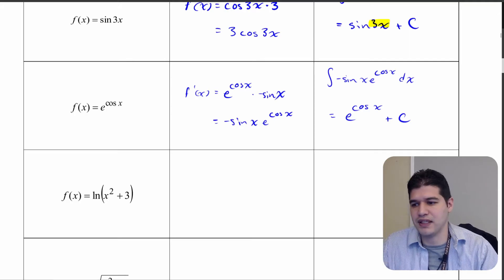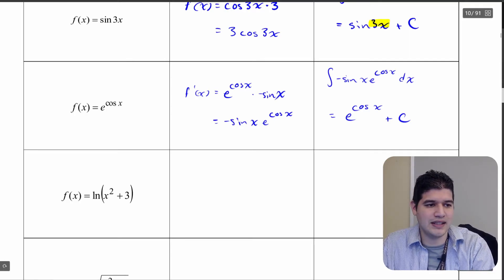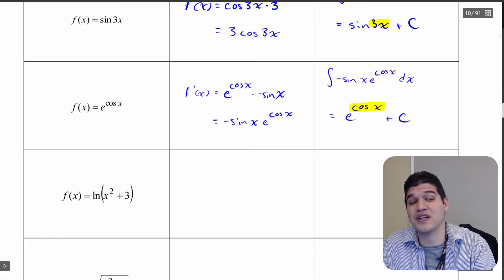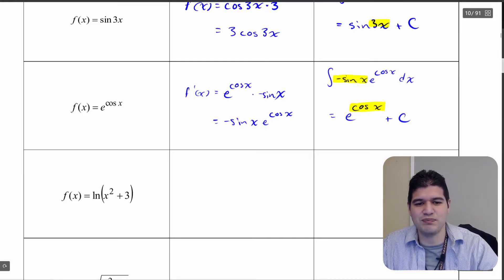Never forget the plus c. What I want us to notice is: what is the inner part of this function? That is cosine of x. And what's the derivative of cosine of x? That's negative sine x. So just seeing if we can find some patterns.